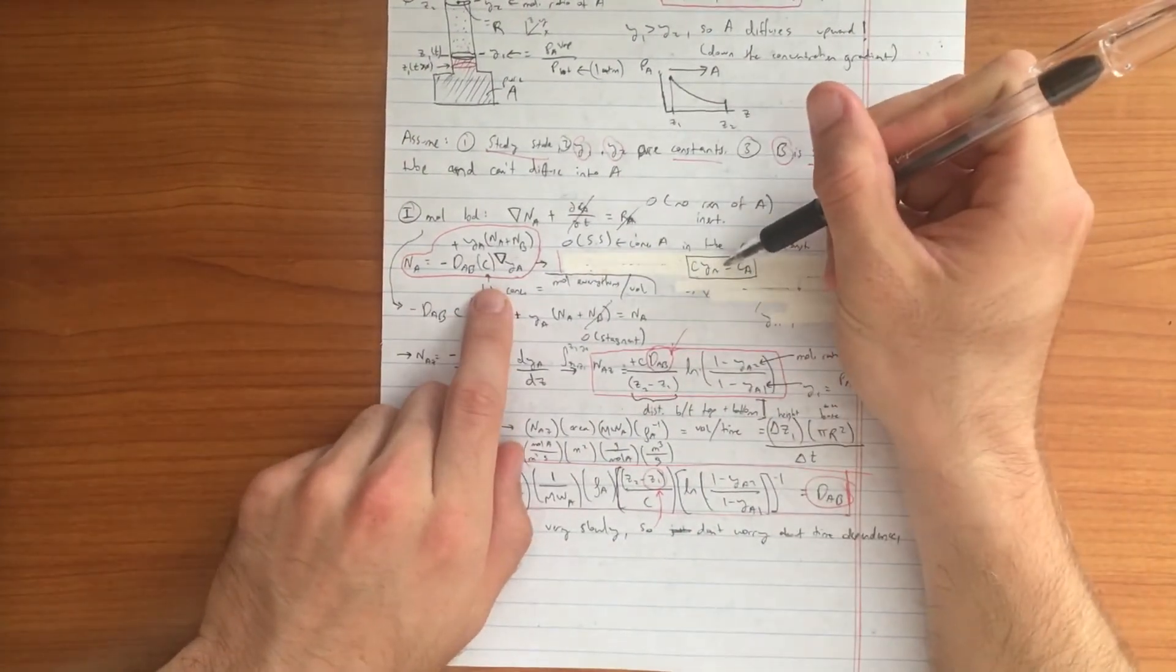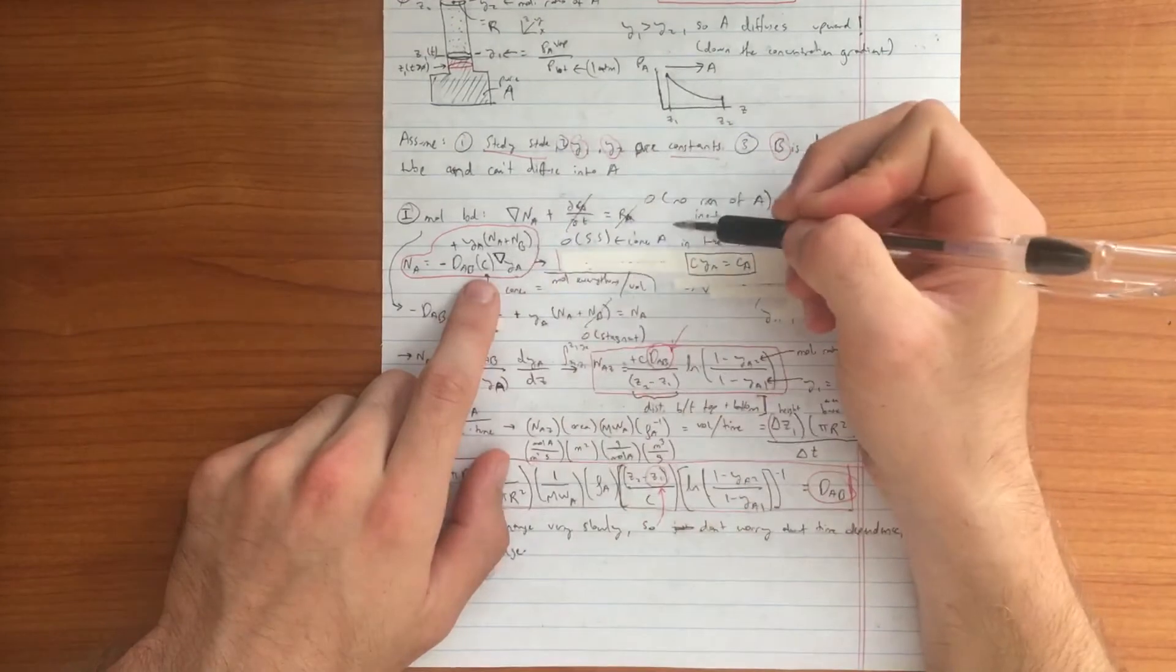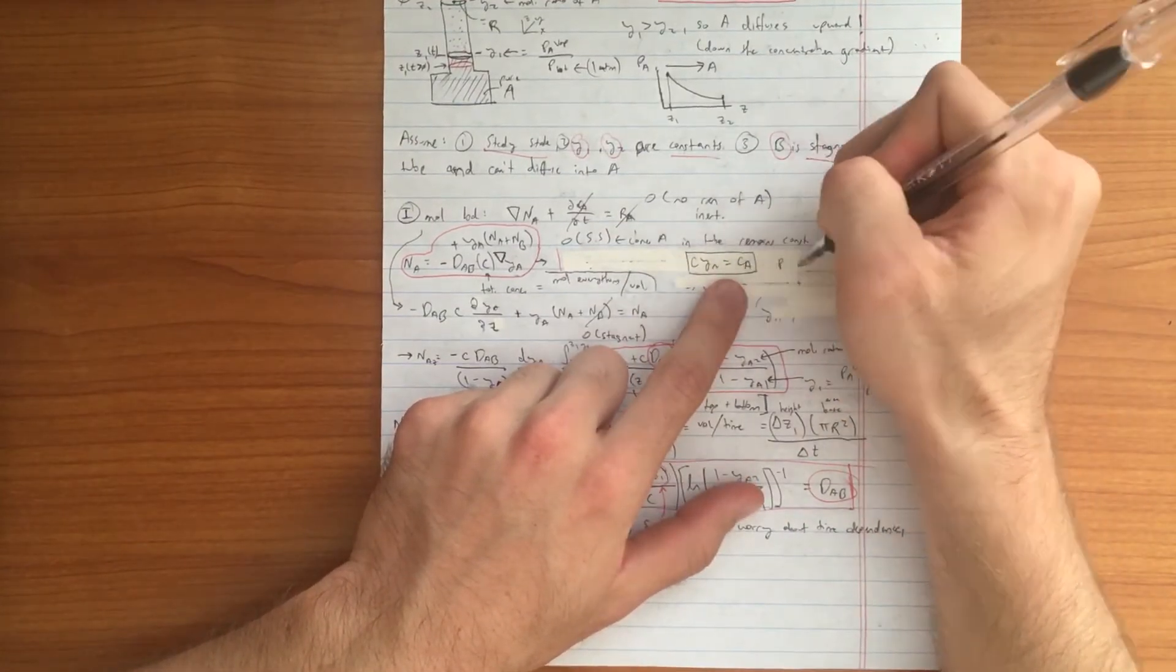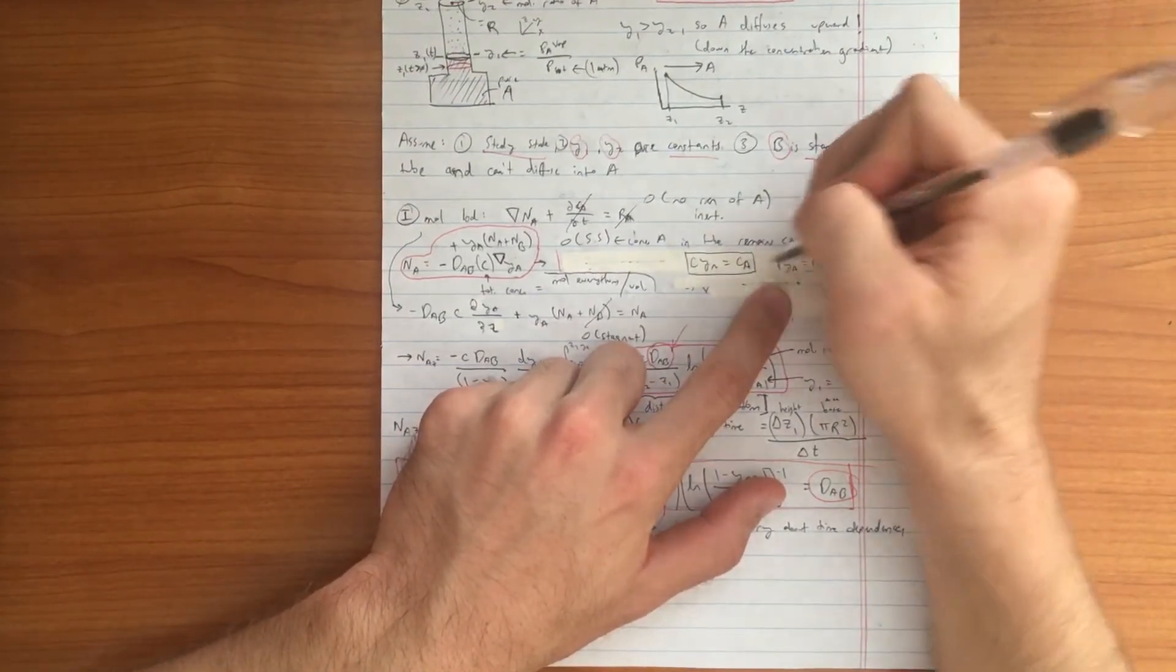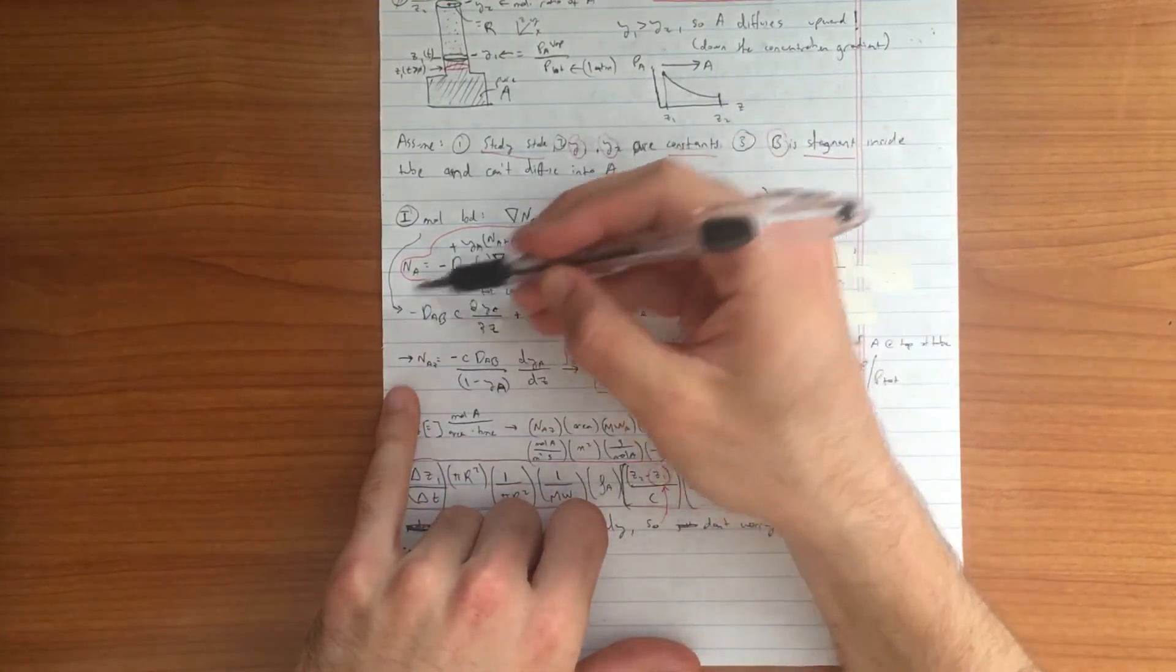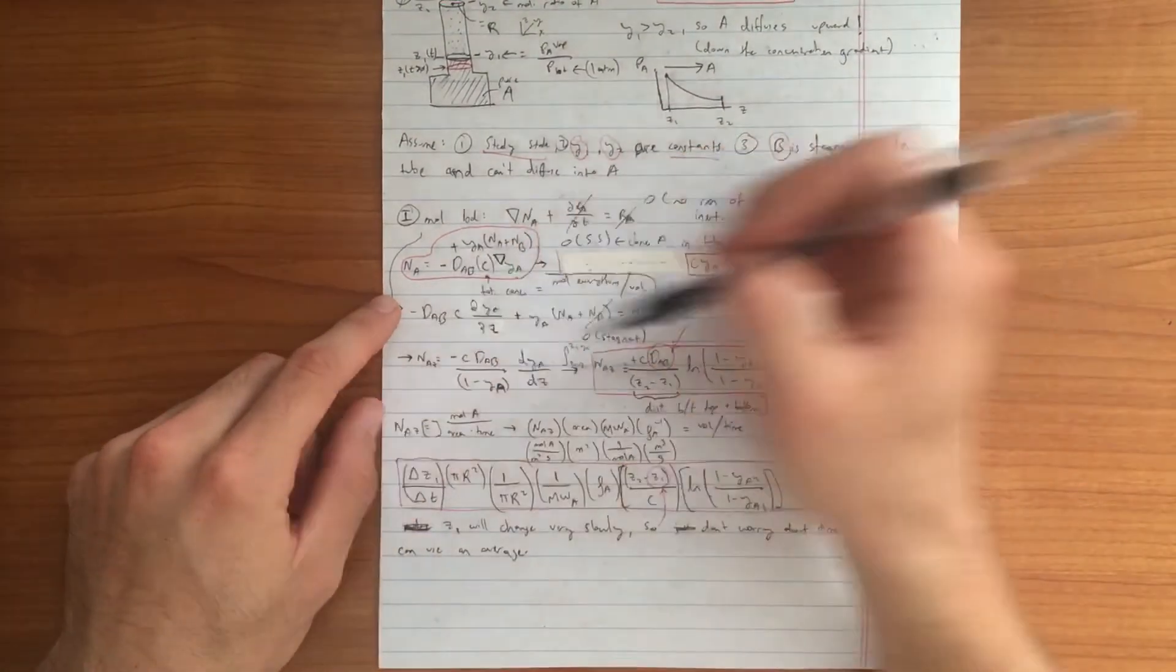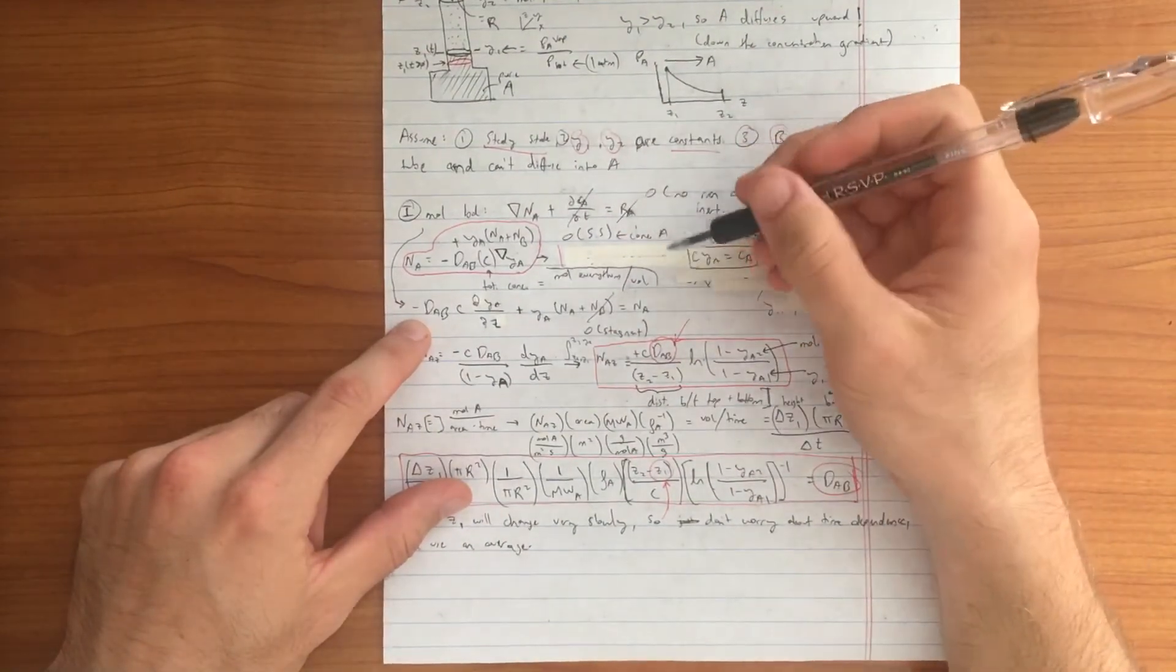Another important thing to note when you are analyzing molar flux is this C term you see pretty often. If you multiply C by YA, you get CA. And if you had the total pressure and you multiply that by the molar ratio of A, you would get the partial pressure of A. Once we've simplified our mole balance and analyzed our molar flux, the next step is we can further analyze and simplify our equation to get closer to solving what the diffusivity coefficient is, the diffusion coefficient.